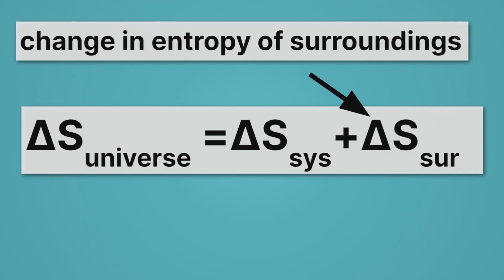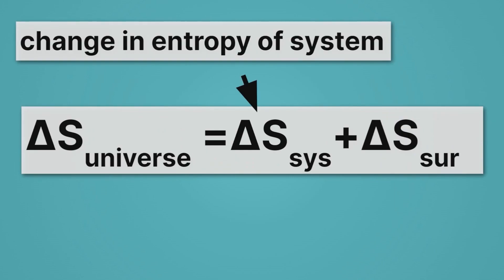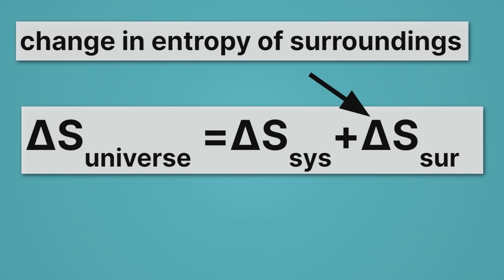So taken as a mathematical equation, there are a number of ways we can get delta S of the universe being positive. The second law just says the entropy change of the universe must be positive. But we could, for example, have a negative change in entropy of the system with a much more positive change in entropy in the surroundings, such that delta S of the universe is still positive.